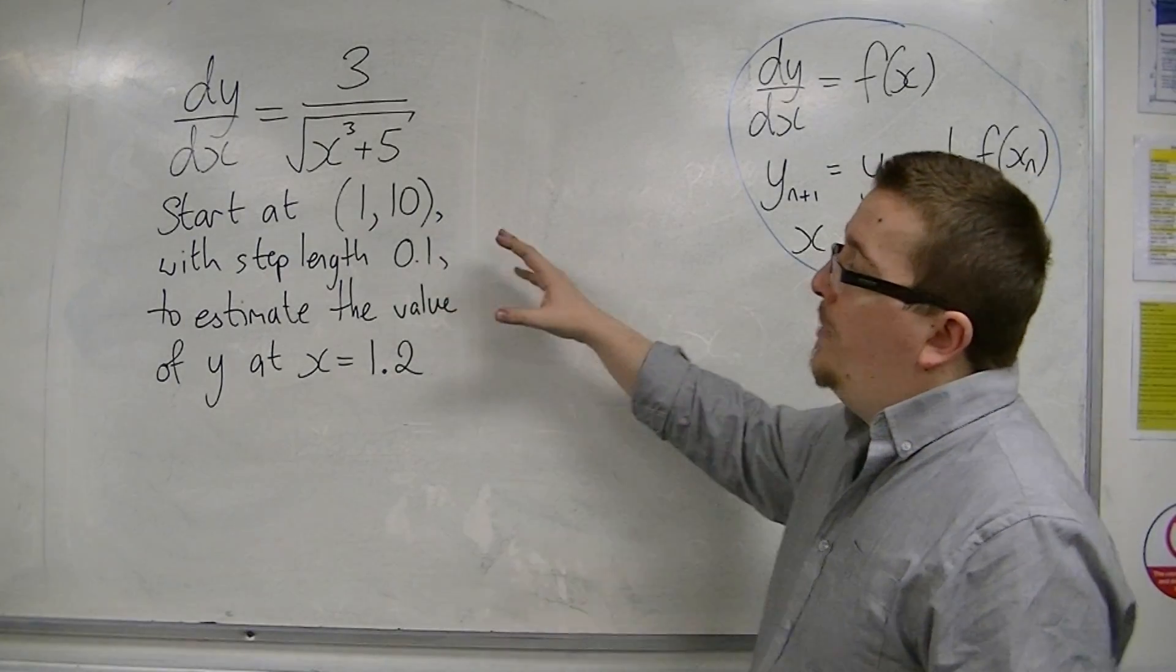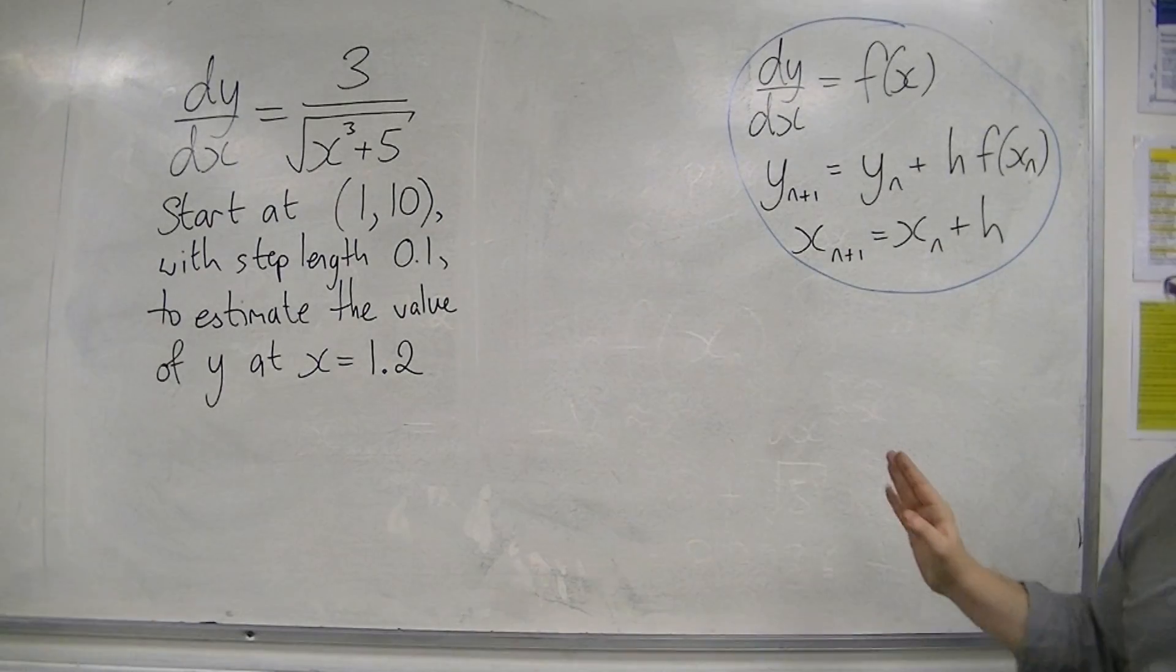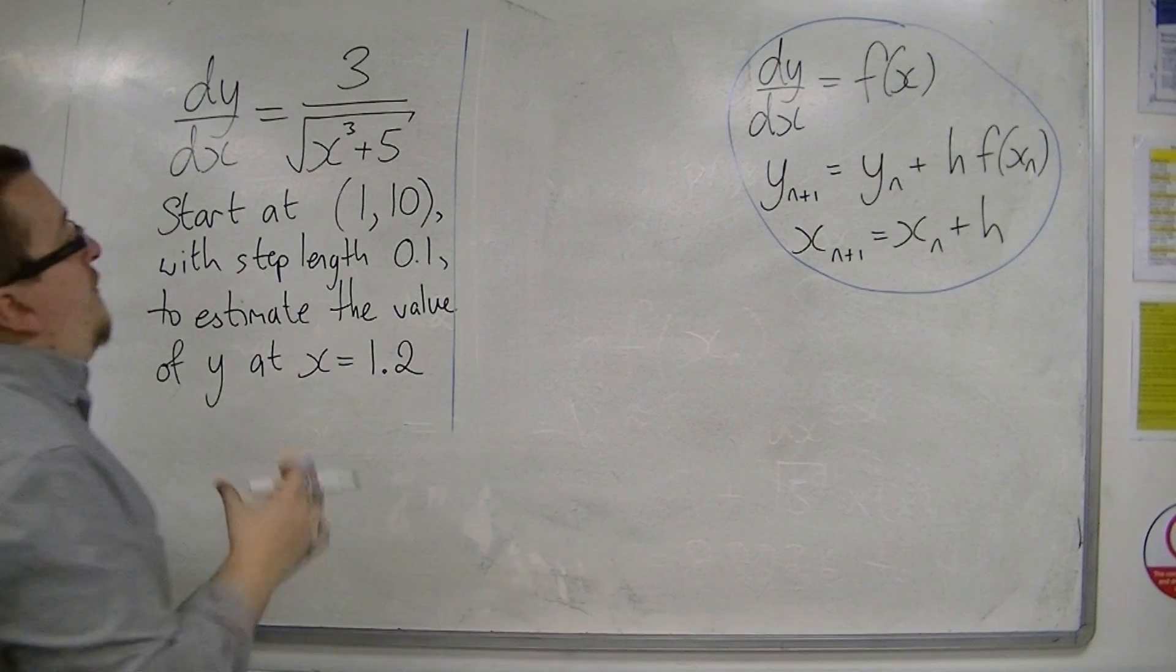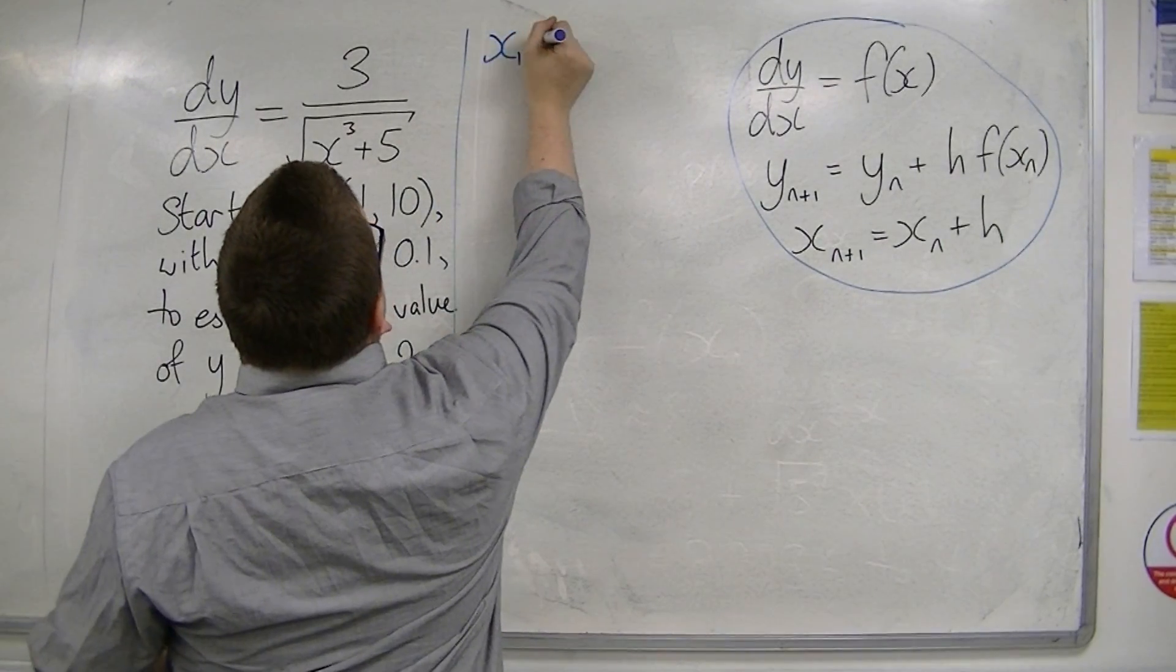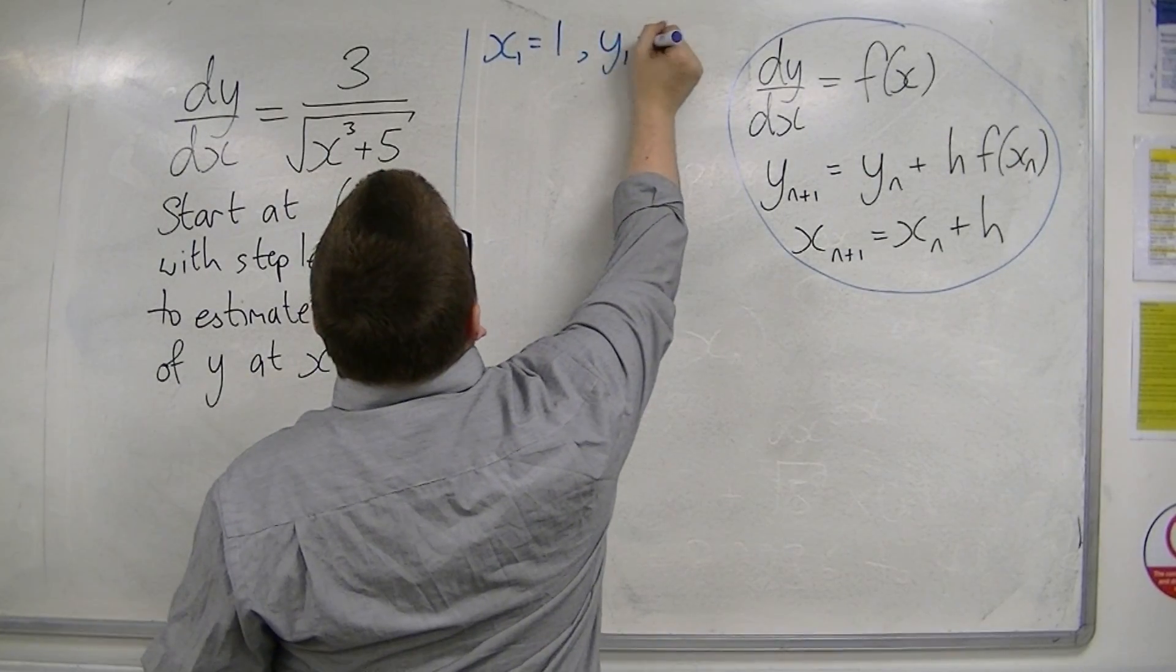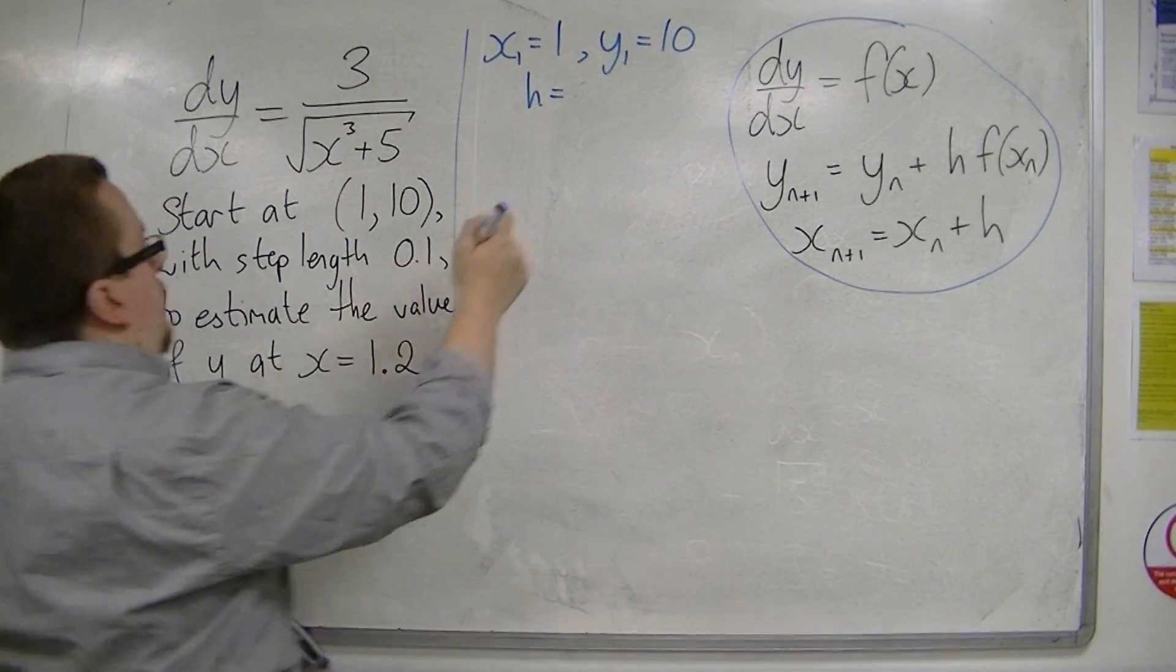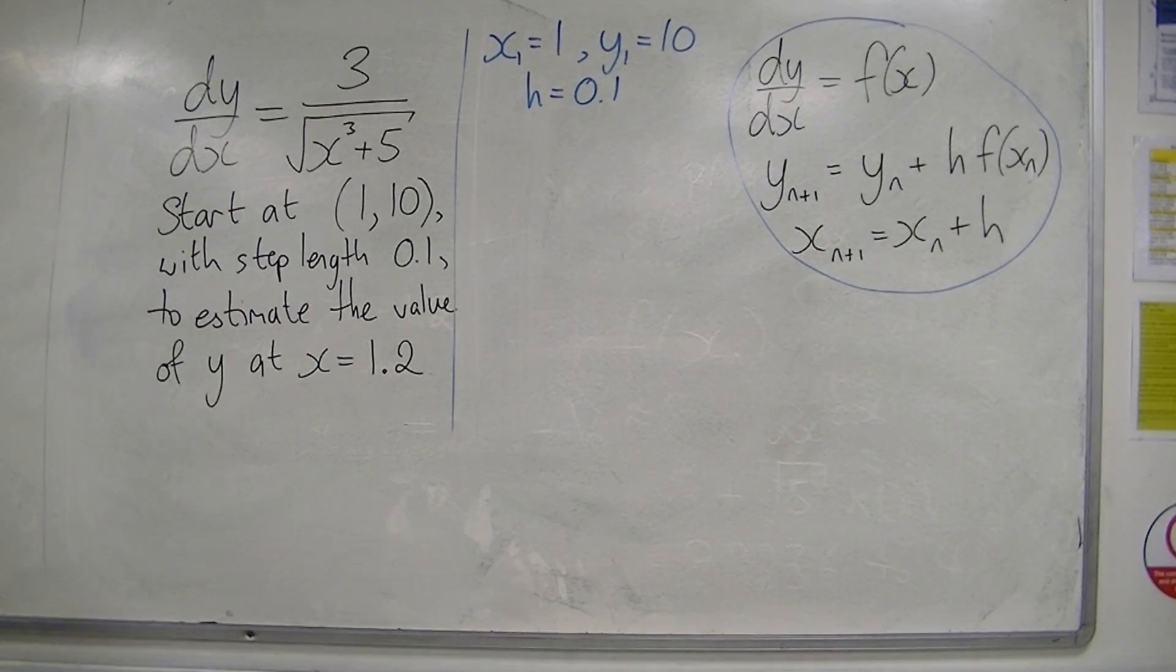Because we've got a step-length of 0.1 and we're starting at x equals 1, that means we're going to have to do it a couple of times. So first, we've got x₁ equals 1 and y₁ equals 10, and we have a step-length h of 0.1. That's our starting information.